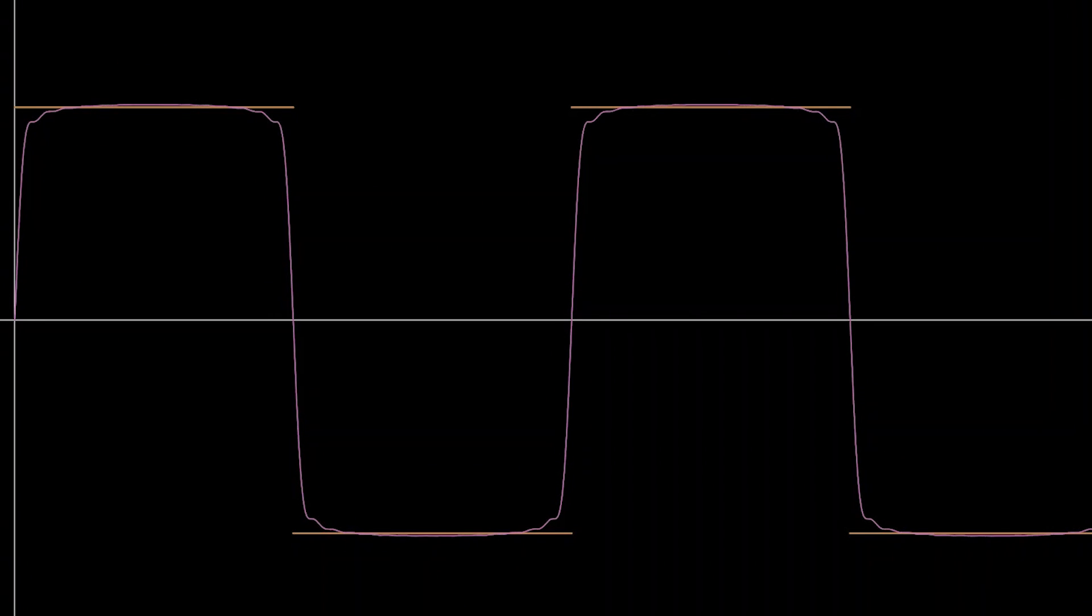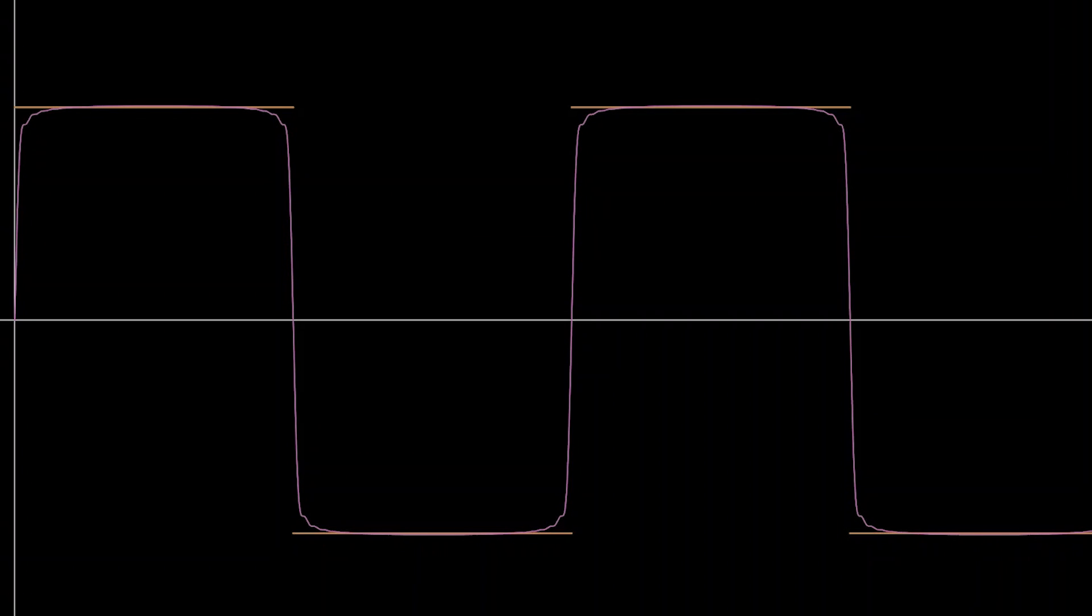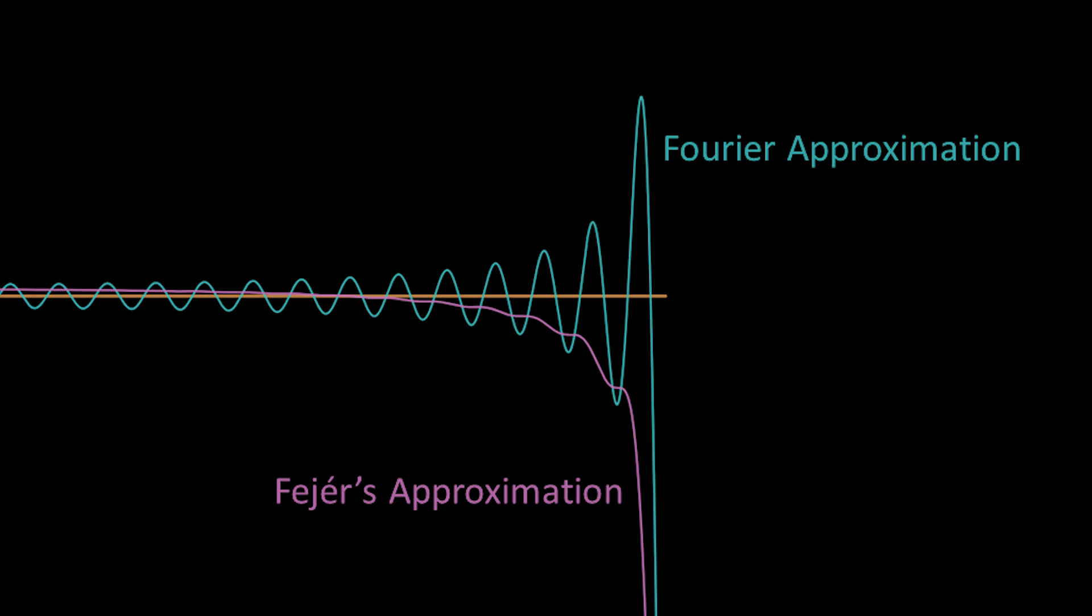When you combine Cesàro sums and Fourier sums, they're called Fejer sums, by the way. When we do this, we get once again an approximation of the original function that becomes better and better the more terms we take. Zooming into the discontinuity, the Fejer summation just sort of falls away from the original function, as opposed to overshooting it, a perhaps more desirable behavior when doing an approximation than with just regular Fourier series and that Gibbs Phenomenon.